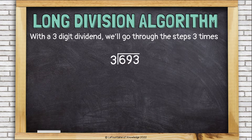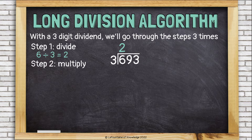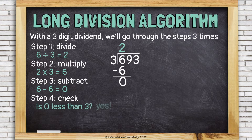Let's try dividing with a three-digit dividend. This means we're going to go through all five steps three times — for each of the digits: the six, the nine, and the three. Step one, divide: we start with the six and divide it by three, which is two. Step two, multiply: two times three is six. Step three, subtract: six minus six is zero. Step four, check: is zero less than three? Yes.